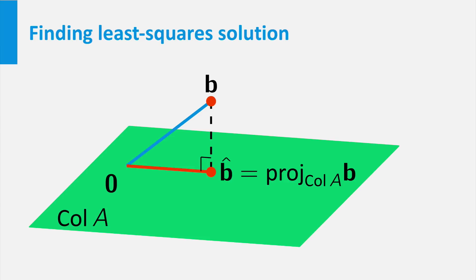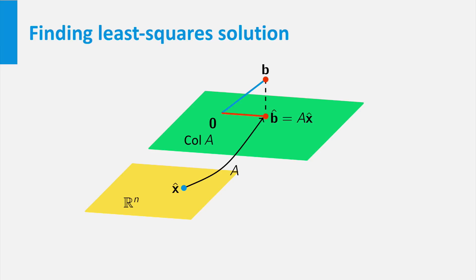A least square solution x̂ must have the property that A times x̂ is as near as it can get to b. But since A times x̂ lies in the column space of A as well, x̂ must satisfy A times x̂ is equal to b̂.